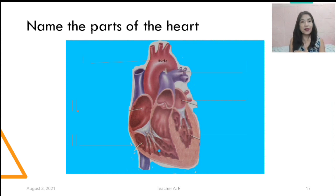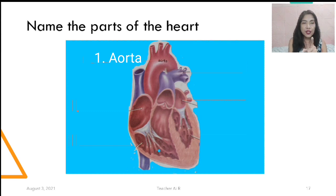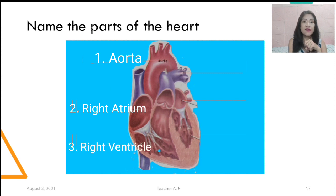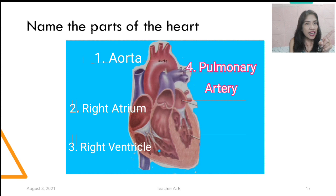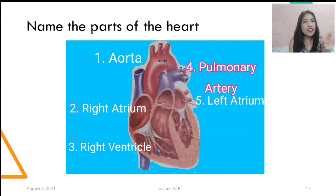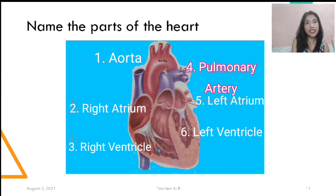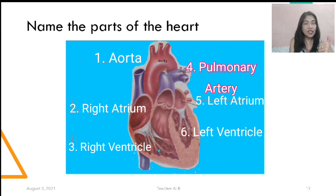Always remember the left and right part, the upper and lower chambers. Number one is the aorta. Number two is the right atrium — A comes first before V, so the lower is the right ventricle. Going to the lungs is the pulmonary artery. Going back to the heart from the lungs, we're now in the left part — so it's the left atrium, and the lower part is the left ventricle. And blood will go out of the body via the aorta.